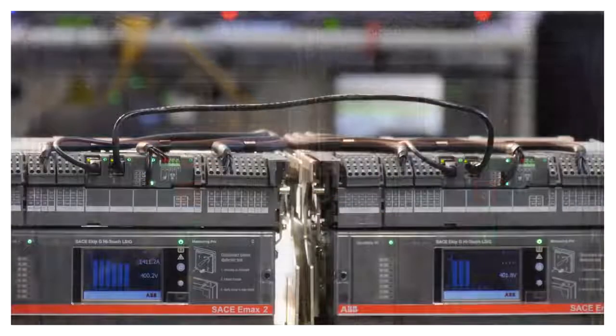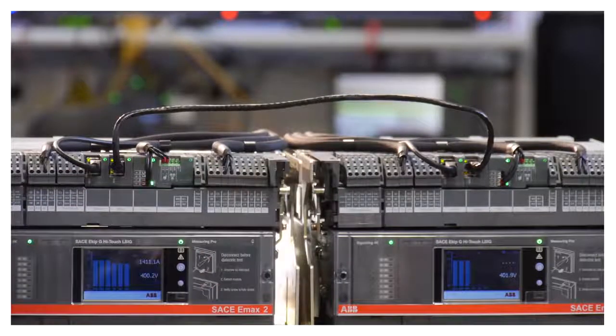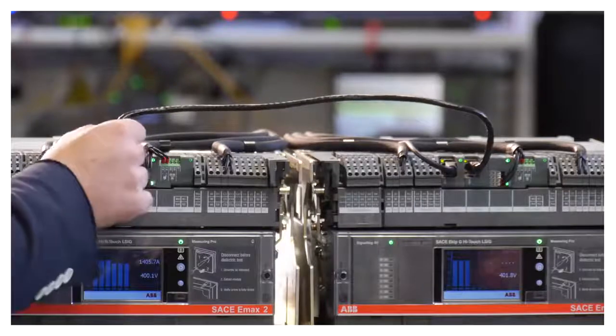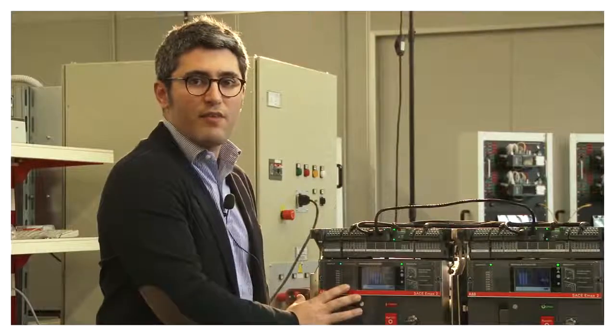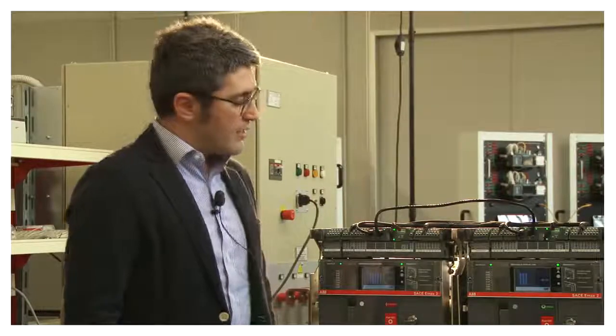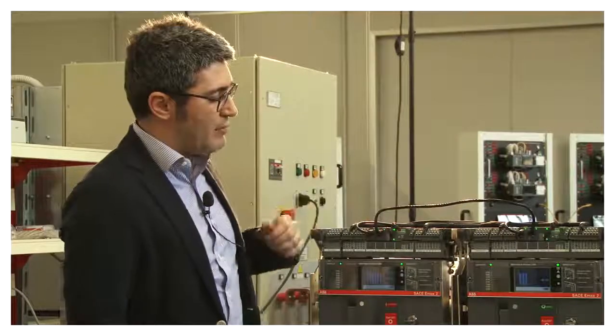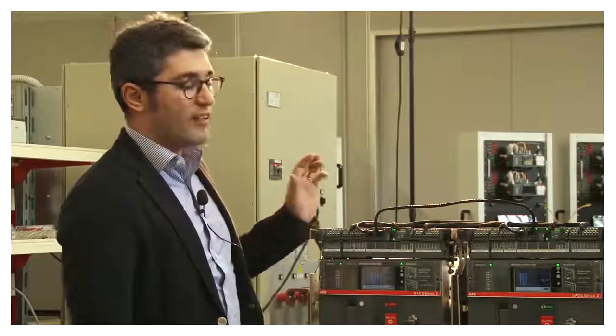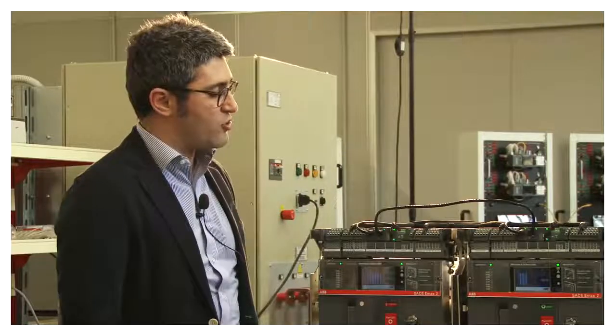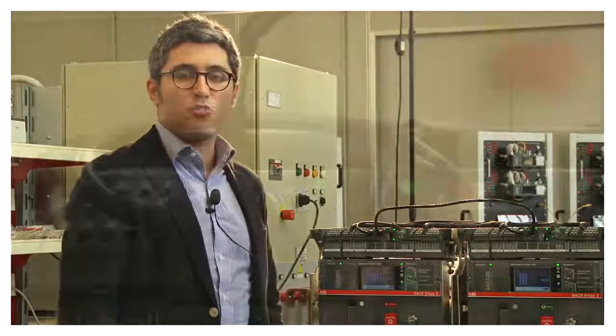Thanks to the Equip Link modules it's possible to create a direct communication between trip units using a high speed communication bus called Link and able to exchange all information from one device to another one. In this way it's possible to make automatic transfer switch or more complex logics. As you can see here, it's enough to have only one cable to make all this type of application without using external cabling, external sensor or additional external unit. That means a very optimized solution for your switchboard.